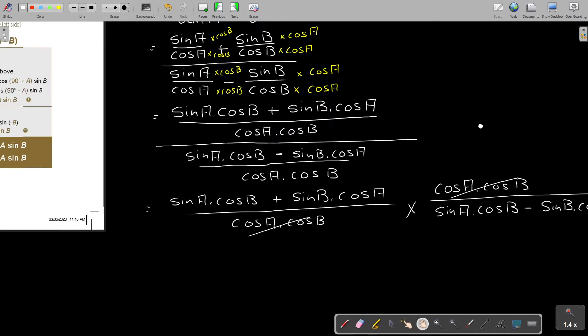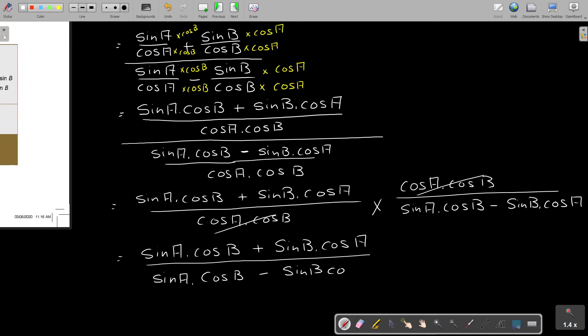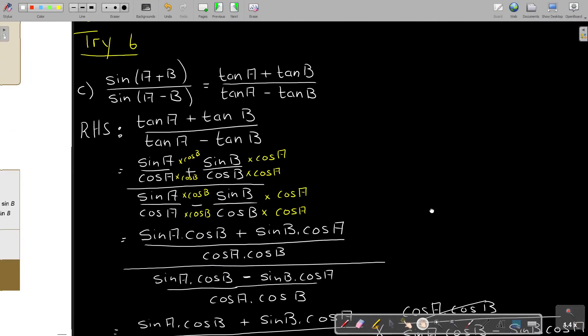And now I can do the reciprocal. I'm doing it a little bit long, you can do it shorter. It's a lot of writing over, but I just want to show you. So this is cos A cos B, and then I'm going to multiply with the reciprocal, which is cos A cos B over sin A cos B minus sin B cos A. And now you will see that that cancels out. So what am I left with? I'm going to be left with sin A cos B plus sin B cos A over sin A cos B minus sin B cos A.